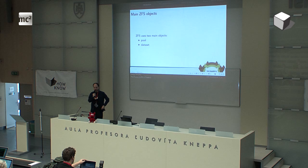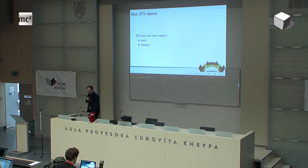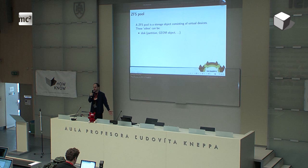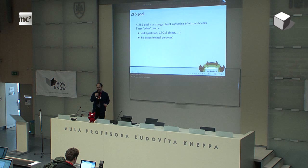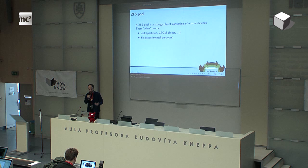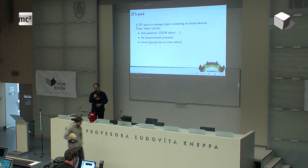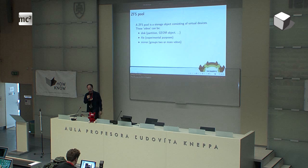ZFS has two main objects: a pool and a dataset. A pool is a storage container consisting of virtual devices called VDEVs in ZFS terminology. The main VDEV commonly used is an actual disk device — it can be a partition in FreeBSD or any kind of GEOM object. There is also a file device, meaning ZFS can use a single file to allocate storage, though this is recommended only for experimental purposes such as ZFS testing. Combined devices include the mirror, which groups two or more basic VDEVs and mirrors all data across them.